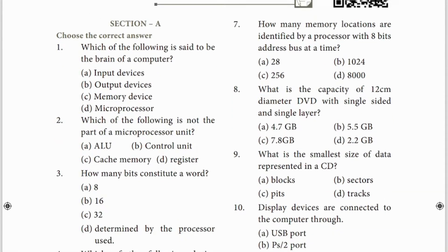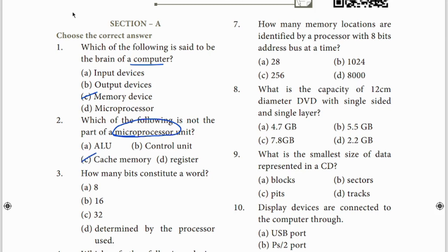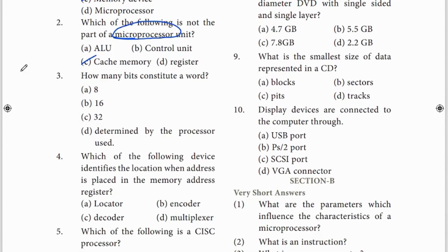Lesson 3, first question: which of the following is said to be the brain of the computer? NAND pannna mudiyon - memory. Brain-la store pannna mudiyon - so brain means memory. The answer is CPU. Second question: microprocessor - catch it, microprocessor has three key parts. Third question: how many bits constitute a word? The answer is option D - the number of bits.